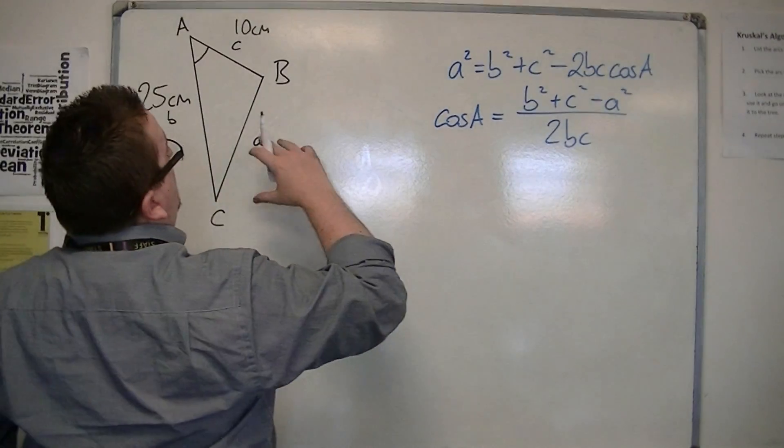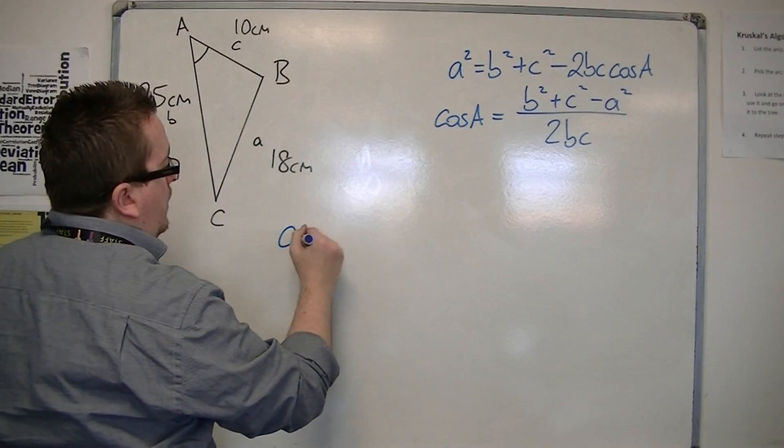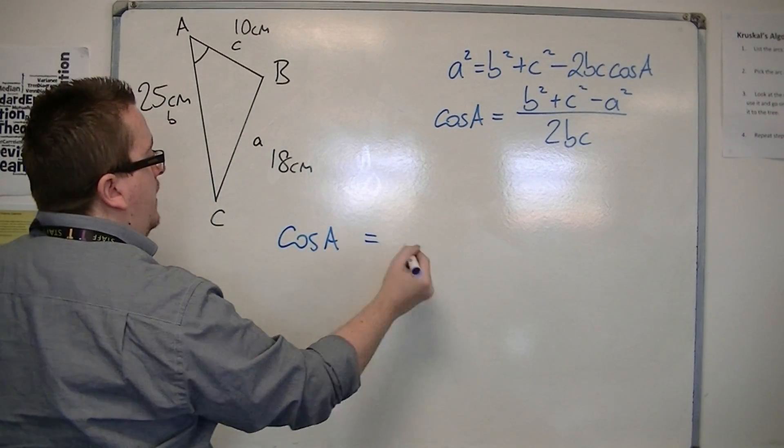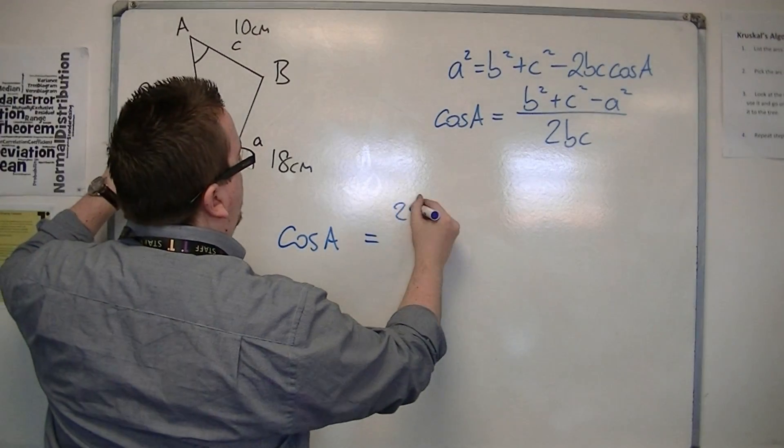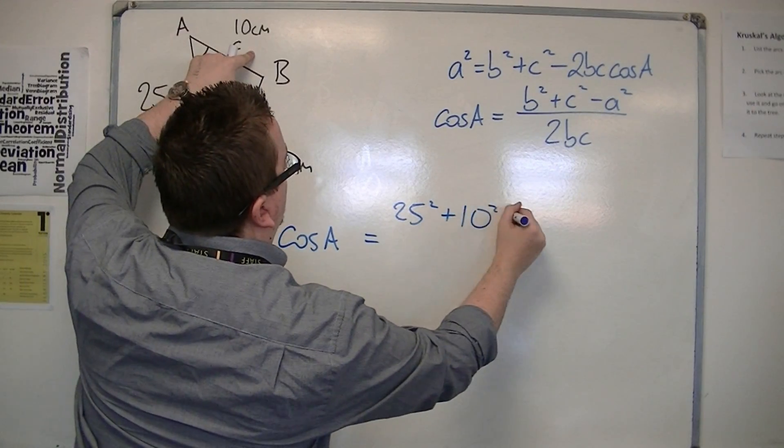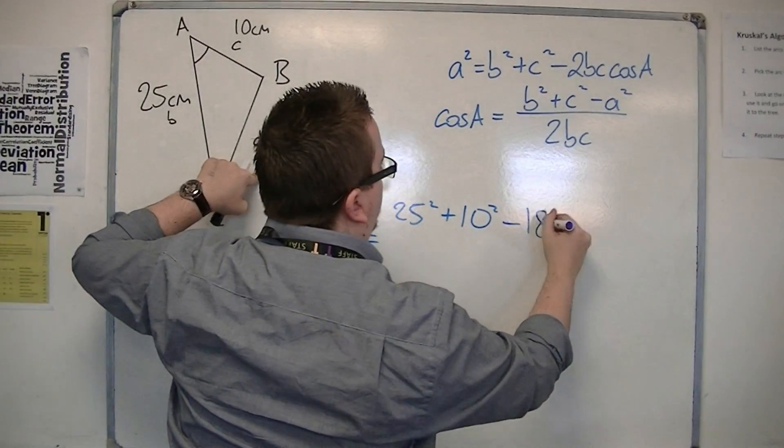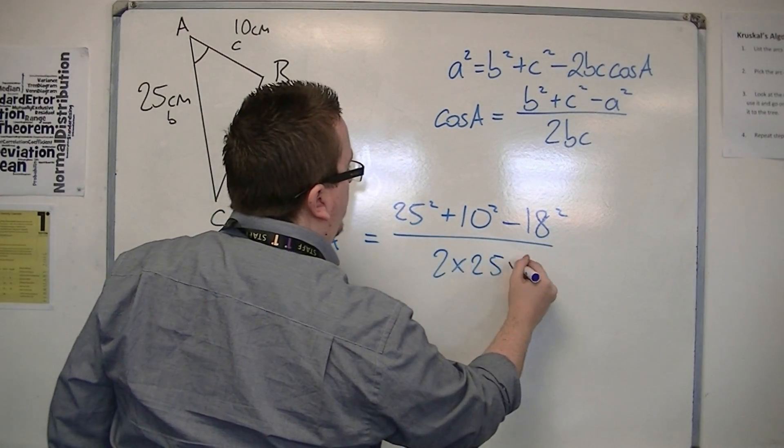So I can substitute the numbers straight into this one if I like, or straight into this one. I'm going to substitute it into the second one. So cos A is b squared, so 25 squared, plus c squared, so 10 squared, take away a squared, so 18 squared, all over 2 times b times c.